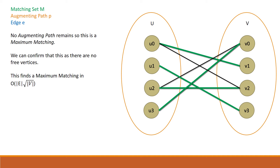No augmenting path remains so this is a maximum matching. We can confirm this as there are no free vertices, and if there are no free vertices there are no augmenting paths. It is important to remember that there may be free vertices remaining — imagine a situation where there is an extra free vertex in set V. There will be the same number of edges in the maximum matching and a free vertex will remain, but there are no more augmenting paths.